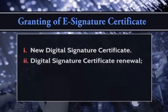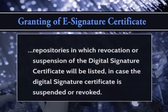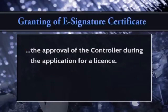Regarding digital signature certificate renewal, the digital signature certificate must contain or incorporate by reference such information as is sufficient to locate or identify one or more repositories in which revocation or suspension of the certificate will be listed. In case the digital signature certificate is suspended or revoked, the subscriber's identity verification method employed for the issue shall be specified in the certification practice statement and shall be subject to the approval of the controller during the application for a license.